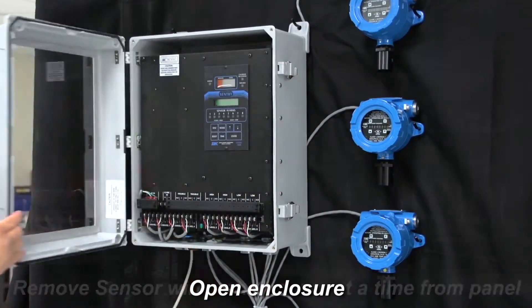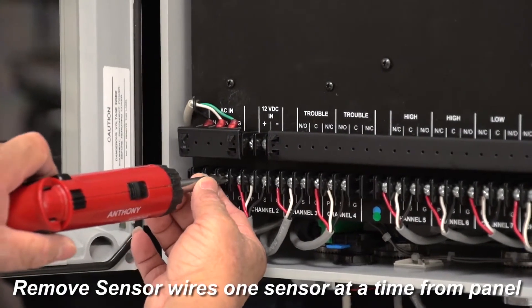Open the enclosure door. Carefully remove the three wires for each channel, one sensor at a time.